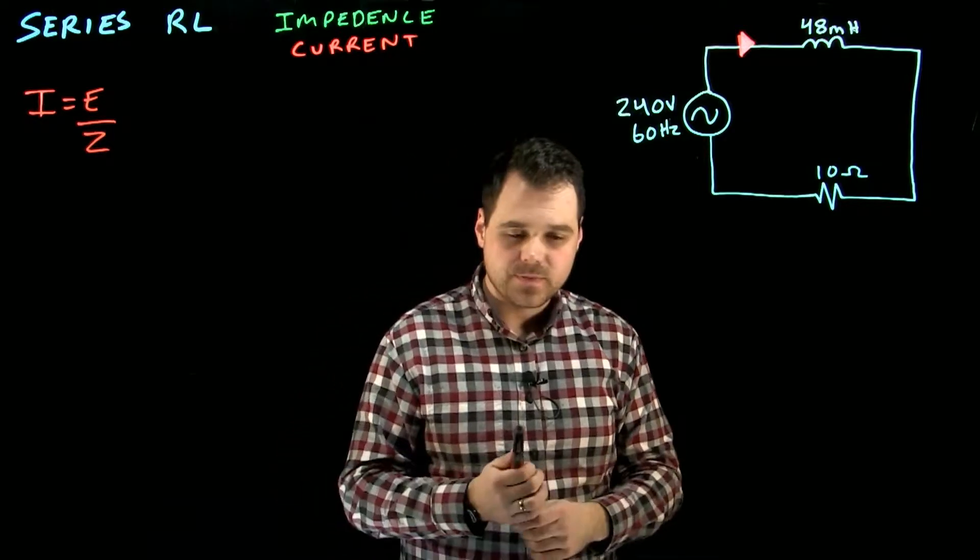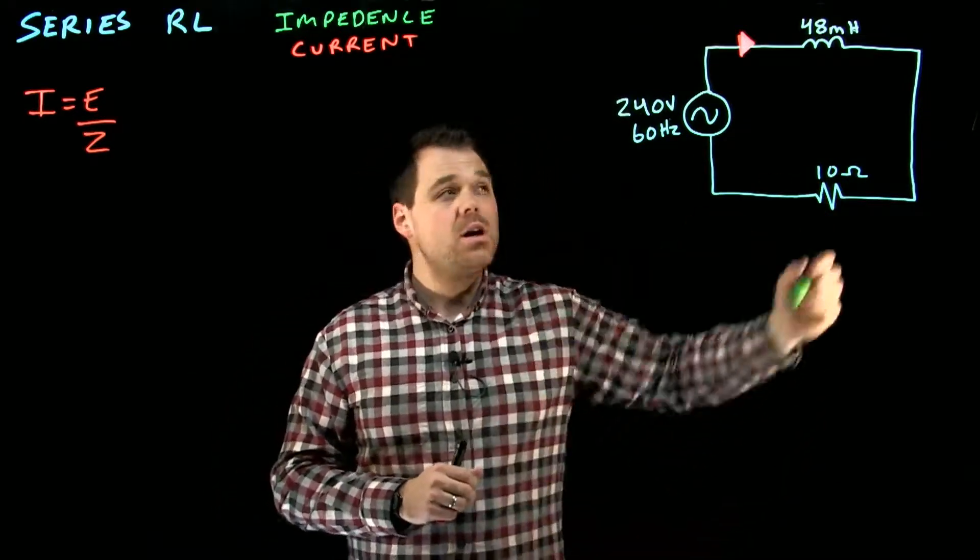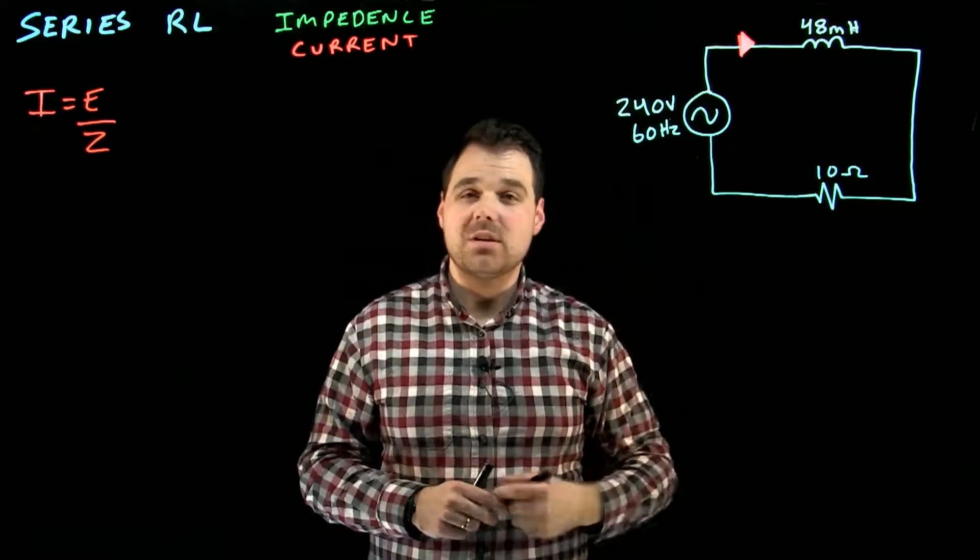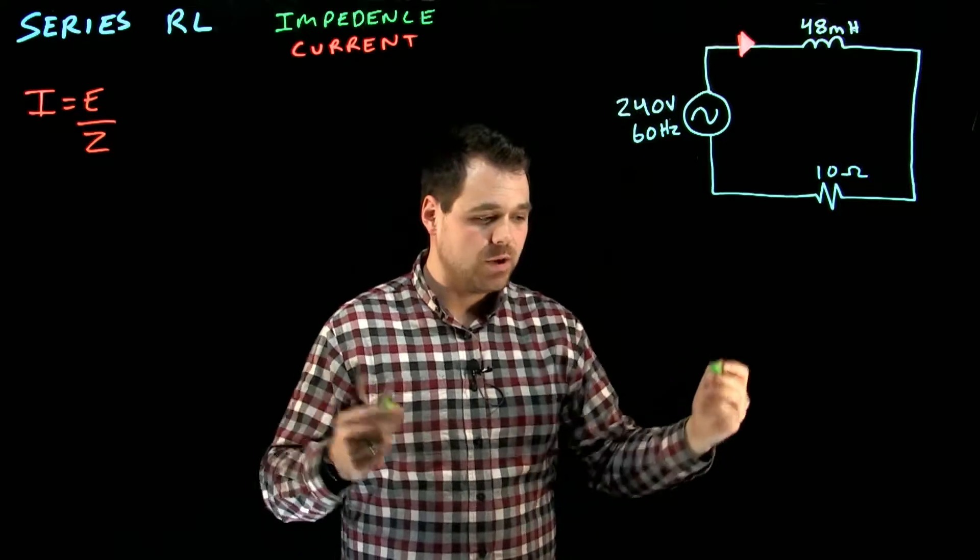So let's start it off. So I'm like, okay, in this circuit I have 10 ohms of resistance. I'm good. I need to take my millihenry value and I need to turn that into inductive reactants, also an ohmic value. So we know our formula.